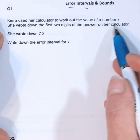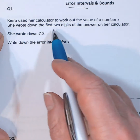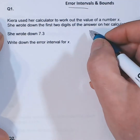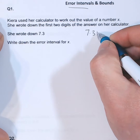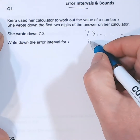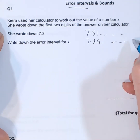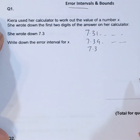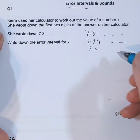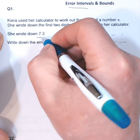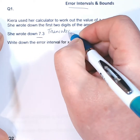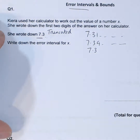We've got a calculator here with a number on it. She wrote down the first two digits of the answer — 7.3. So on our calculator she could have had a number that went 7.31... up to 7.39... It could have been as low as 7.3 itself. This is an example of what we call truncation — she's truncated her answer, literally just writing down what she felt was important: the first two digits.